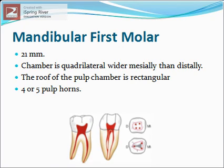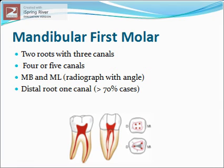Mandibular first molar: the average length is 21 mm. At the level of the pulp floor, the chamber is quadrilateral, wider mesially than distally. The roof of the pulp chamber is rectangular in shape. The pulp chamber may have four or five pulp horns. The mandibular first molar has two roots with three canals; however, four or five canals are also reported. The mesial root has two canals — mesiobuccal and mesiolingual — and to visualize them on radiograph, an angulated view with mesial or distal shift is needed. The distal root generally has one canal in 70 percent of cases.